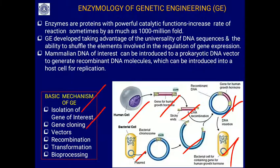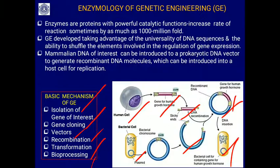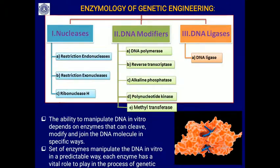The basic mechanisms of genetic engineering include: isolation of the gene of interest, gene cloning to make many copies using vectors — which are called molecular vehicles — to transfer genes from one organism to another. Then recombination to insert the gene into a different cell, transformation of the cell, and bioprocessing to harvest large amounts of gene product in a bioreactor.